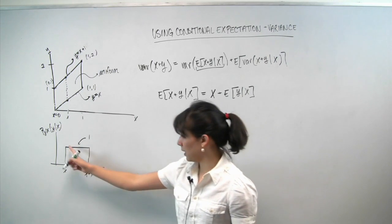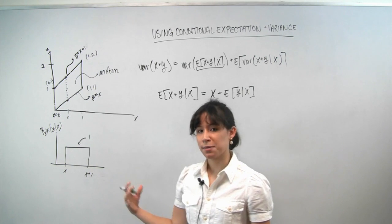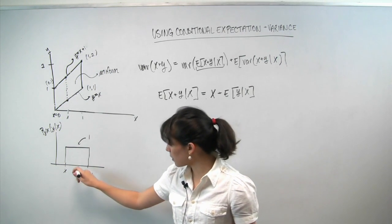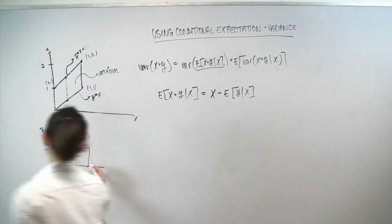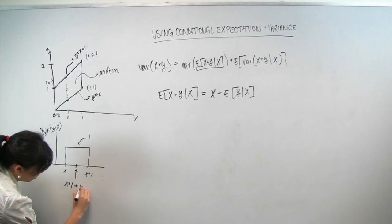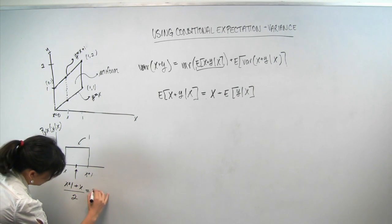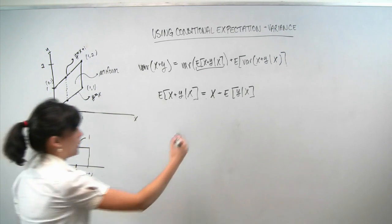Conditioned on x, this is the PDF of y. And because it's uniformly distributed, and because expectation acts like center of mass, we know that the expectation should be the midpoint, right? And so to compute this point, we simply take the average of the endpoints, x plus 1 plus x over 2, which gives us 2x plus 1 over 2. So plugging this back up here,